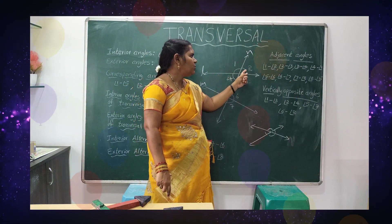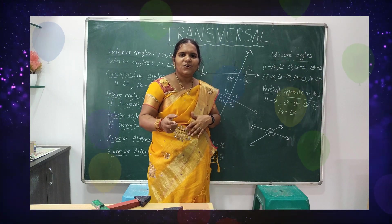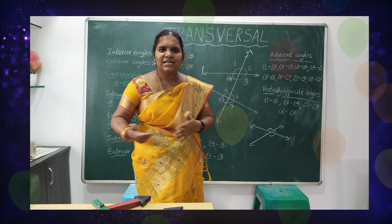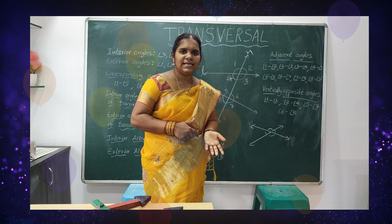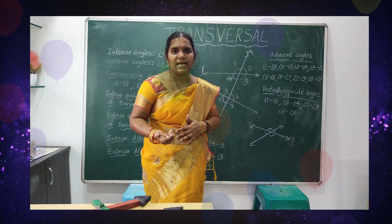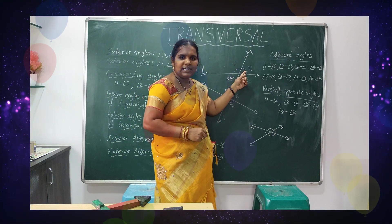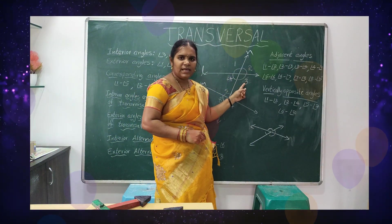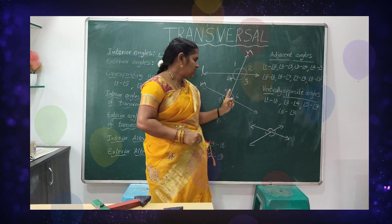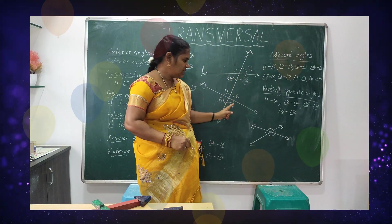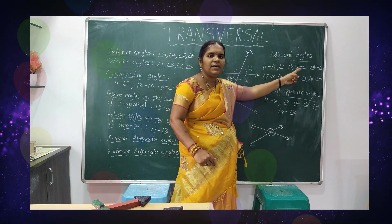Now, if you see angles one and two, how are they related? Side by side — the name for side-by-side angles is adjacent. Adjacent angles means they are next to each other: one and two are adjacent, two and three are adjacent, three and four are adjacent, four and one are adjacent. Similarly five and six, six and seven, seven and eight, eight and five are all adjacent angle pairs.